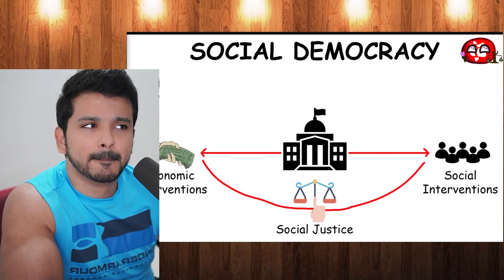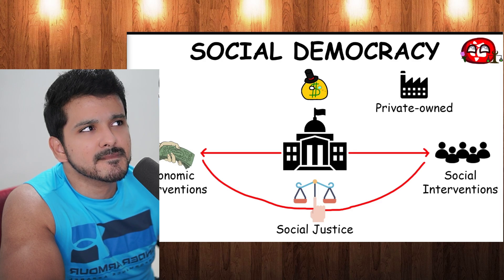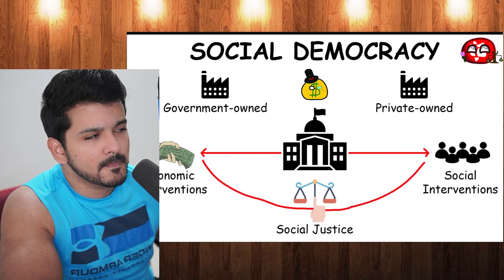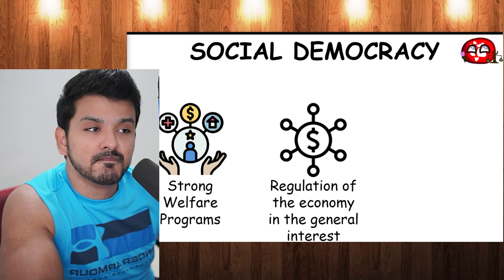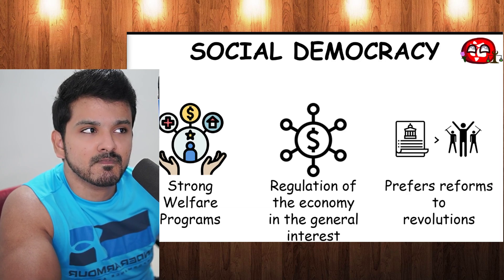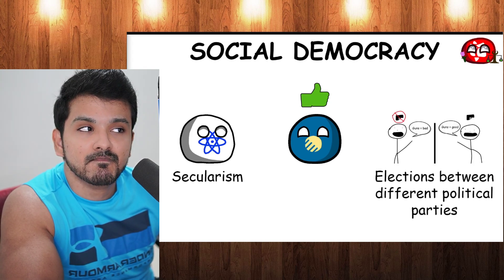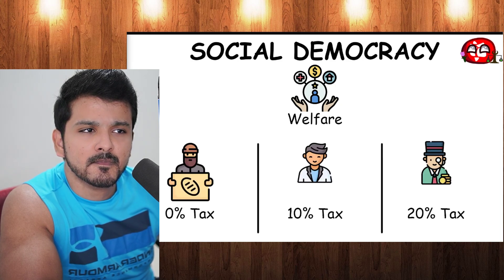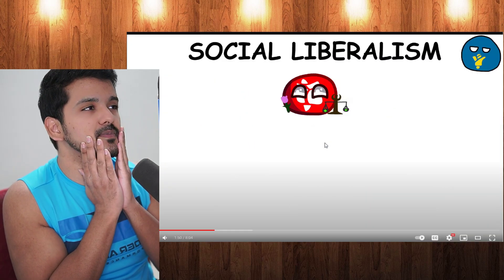Social democracy advocates for economic and social interventions to promote social justice within a capitalist-oriented mixed economy, with both private and public businesses. It likes strong welfare programs, regulation of the economy in the general interest, and prefers reforms rather than revolutions. It supports the liberal democratic framework — separation of religion from government, elections between different political parties. Social democracy usually achieves welfare programs through progressive taxation.